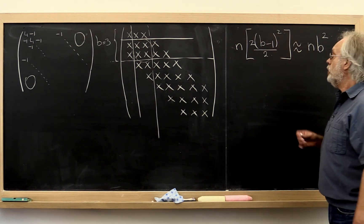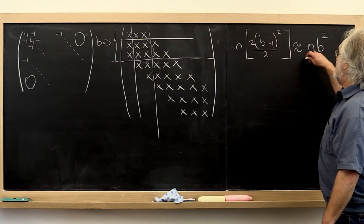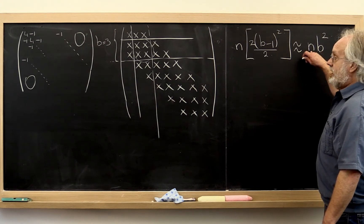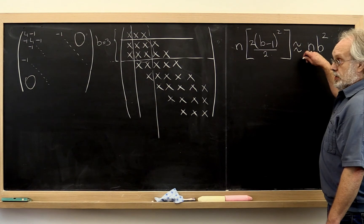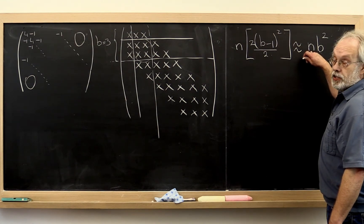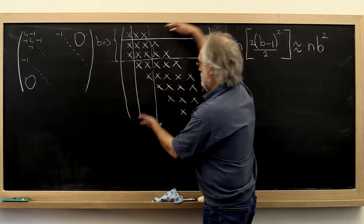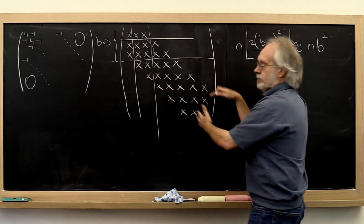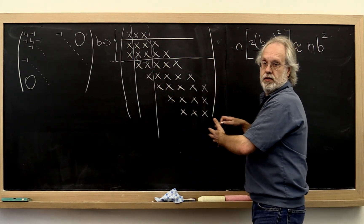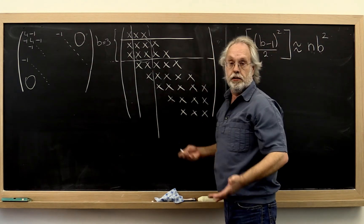Now we notice that when b is equal to n, that doesn't give you back your original analysis of the cost of the Cholesky factorization. But that's because the fact that you're running out of matrix is extremely important if you start with a dense matrix in the first place.